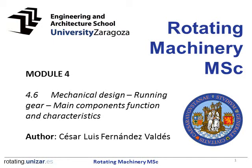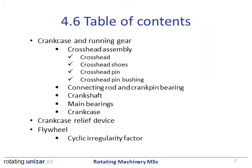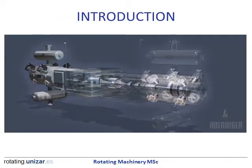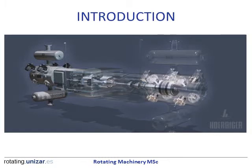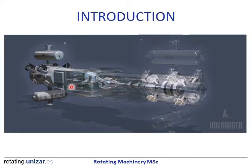This is the second module on mechanical design of compressors. On this module we will cover the running gear. Main components of the running gear are the crankcase and the running gear itself, which is composed of the assembly of the crosshead, connecting rod, crankshaft, main bearings and crankcase, and then side auxiliaries like the crankcase relief valve and the flywheel. We will be concentrating on the crosshead, connecting rod, the crankshaft, and also the crankcase.